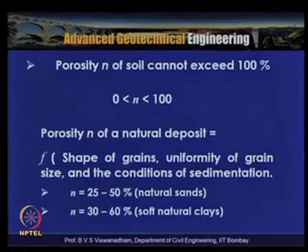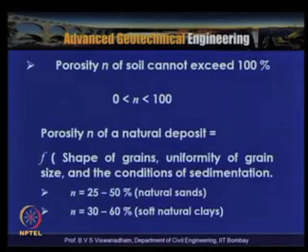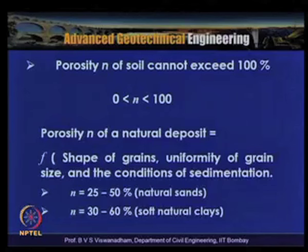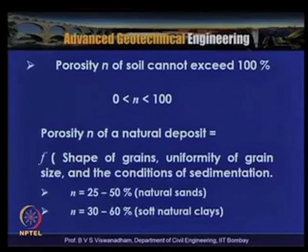Porosity n cannot exceed 100%, ranging between 0 and 100. The porosity of a natural deposit is a function of the shape of grains, uniformity of grain size, and conditions of sedimentation. For natural sands, porosity is in the range of 25–50%; for soft natural clays, porosity ranges from 30–60%.